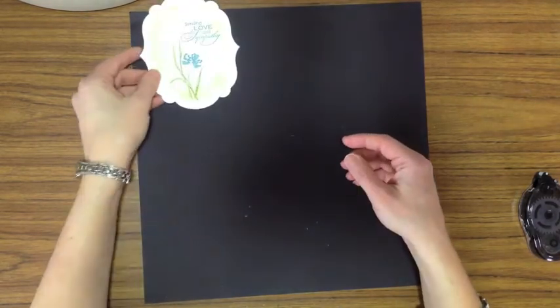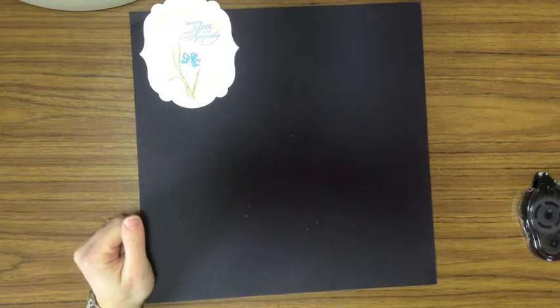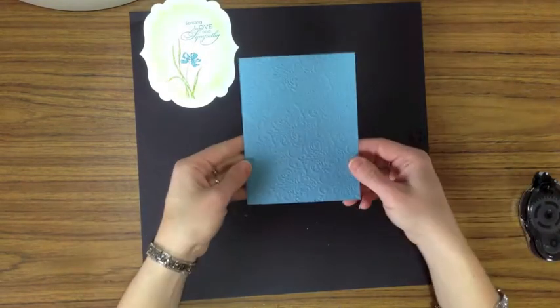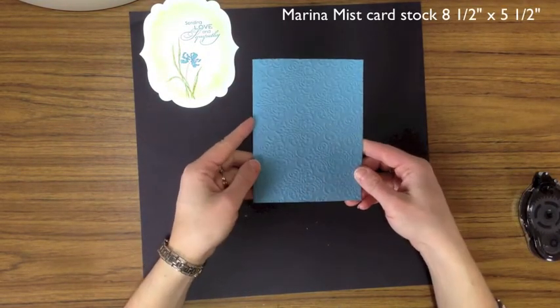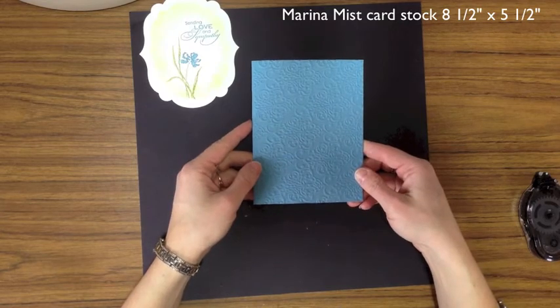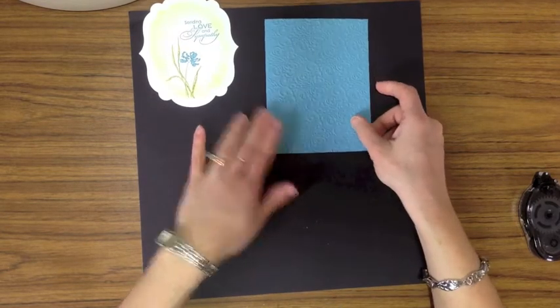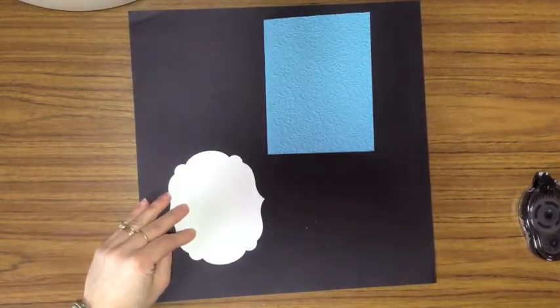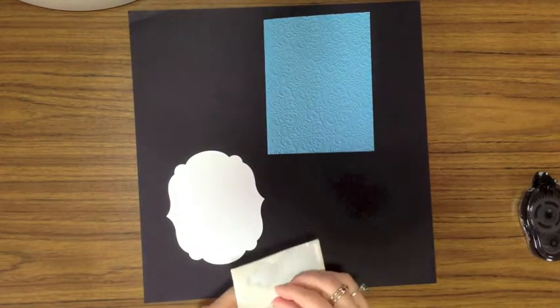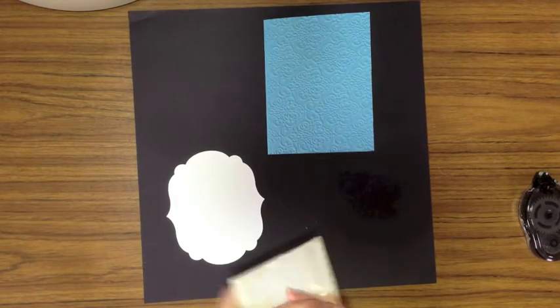Let's put this card together. I have gone ahead and taken my Marina Mist cardstock and ran it through the Big Shot with the Lacy Brocade embossing folder. We'll take our focal point piece here, and I'm gonna add some Stampin' Dimensionals.